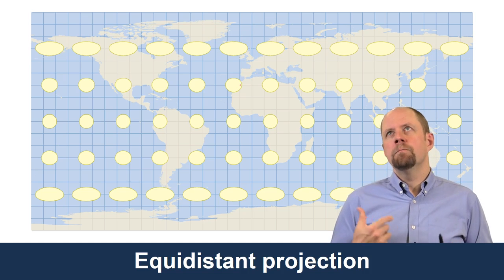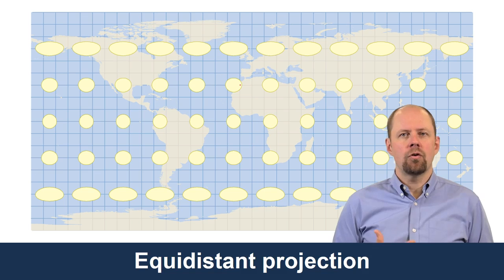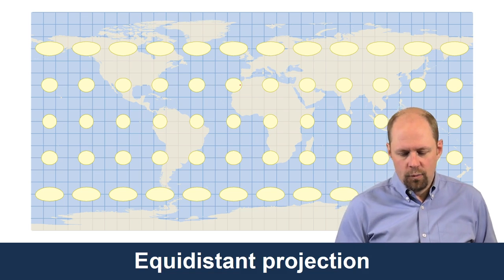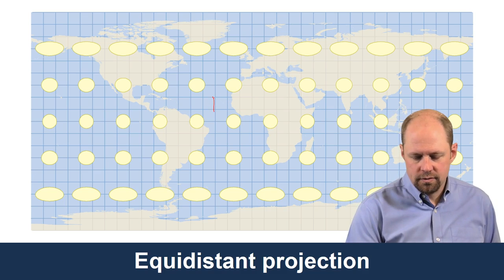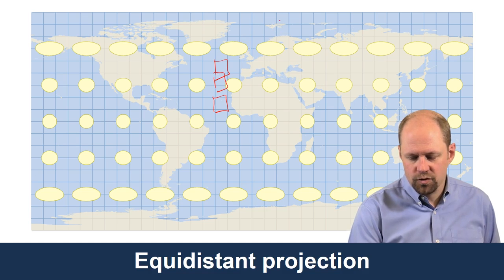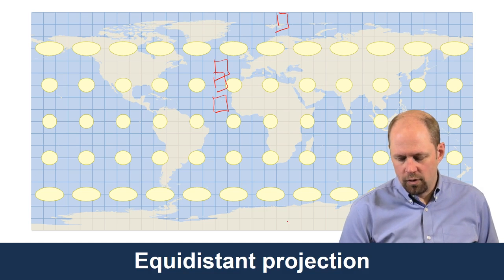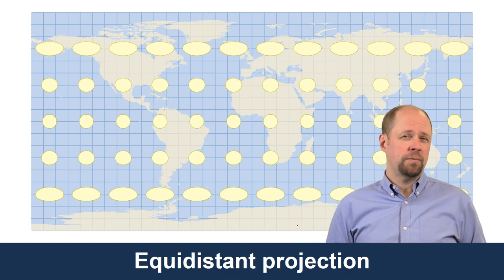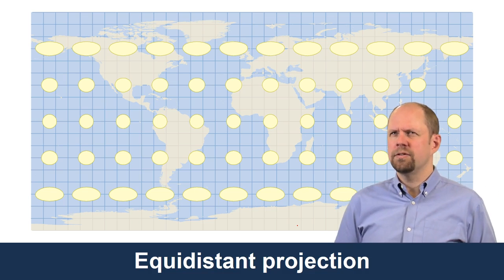The distinctive factor about this projection is that you'll notice that we have squares that are created by the graticule. So all of these are squares, no matter where you are on the map, they're all squares of the same size. So you might think, well, that must be a good thing then, because that means maybe there's not as much distortion.